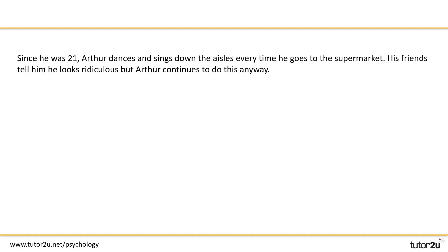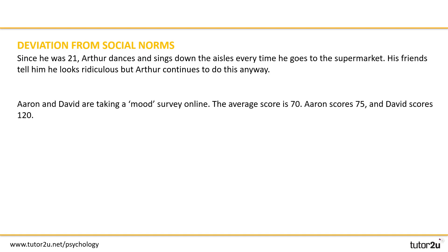Hopefully you managed to pick one for each scenario. First of all we had Arthur, and this was about deviation from social norms since every time he goes to the supermarket he's doing something that deviates from what most other people would consider acceptable. Aaron and David taking a mood survey online — Aaron scores 75, David scores 120 — and this is about statistical infrequency, since we're taking a mathematical approach and David is scoring well above the average.